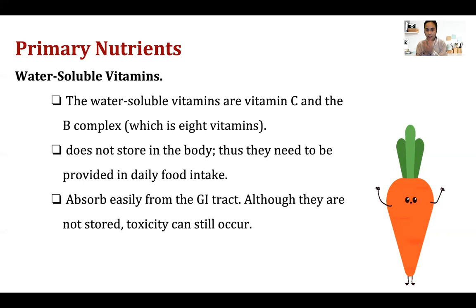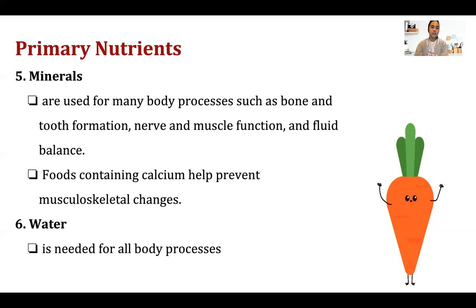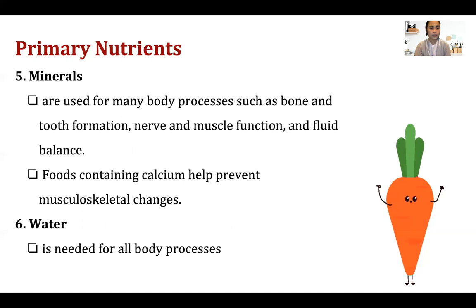If you take a lot of Vitamin C, you don't have any risk of overdose because it will be flushed out through urine, sweating, and other outputs. Minerals are used for many body processes such as bone and tooth formation, nerve and muscle function, and fluid balance. An example is calcium — very important for our bones. Without calcium, you will have bone problems like osteoporosis or osteomalacia.